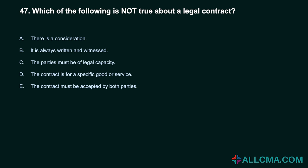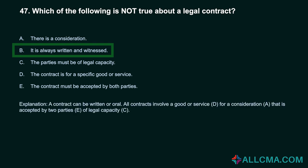Question 47: Which of the following is not true about a legal contract? A. There is a consideration. B. It is always written and witnessed. C. The parties must be of legal capacity. D. The contract is for a specific good or service. E. The contract must be accepted by both parties. Correct answer: B. It is always written and witnessed. A contract can be written or oral. All contracts involve a good or service for a consideration, that is accepted by two parties of legal capacity.